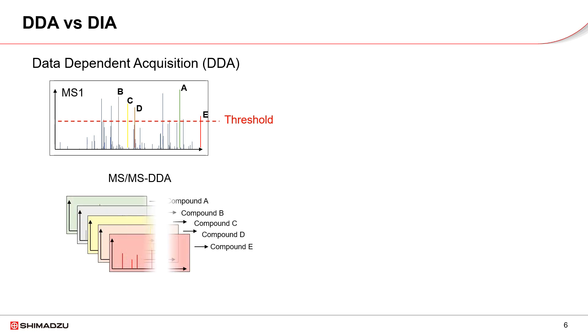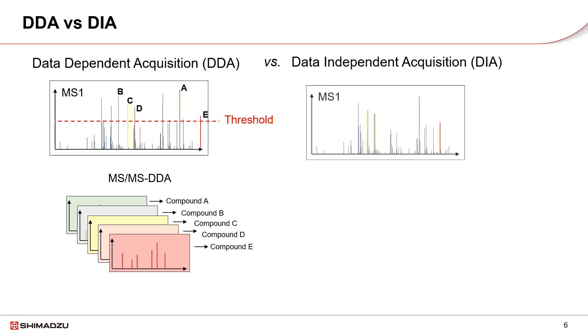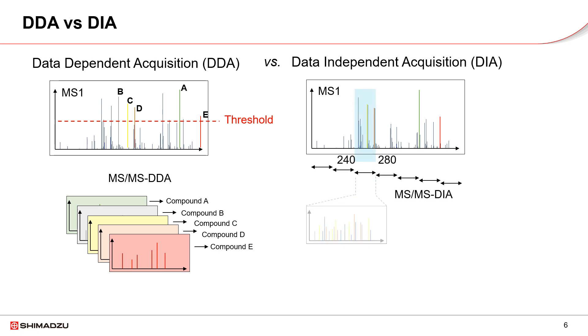In DIA mode, all ions within a mass window, for example, from mass 240 to 280, all ions are sent to the collision cell for fragmentation. The resulting MS-MS spectra cannot be read directly without a deconvolution processing.